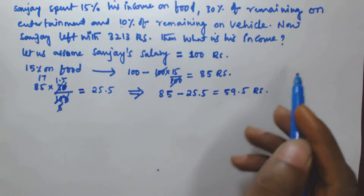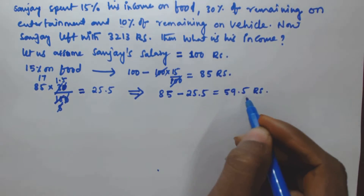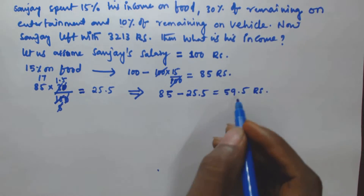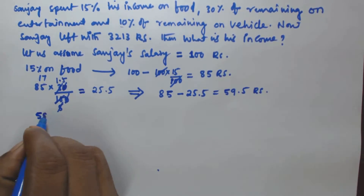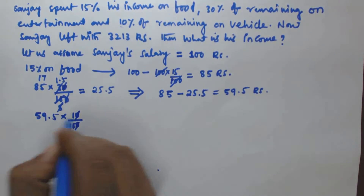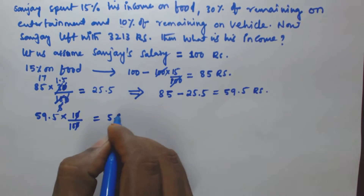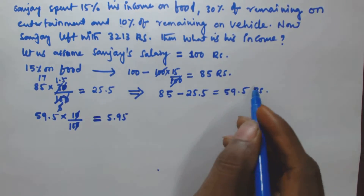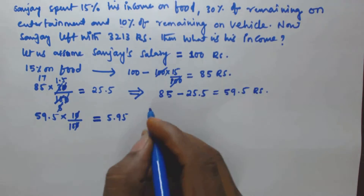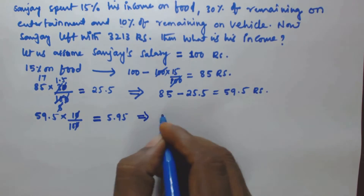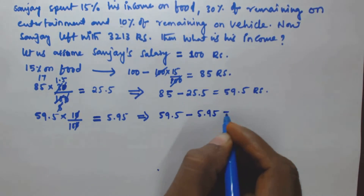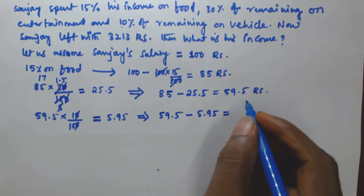Now 10% of remaining — remaining is ₹59.5 — is spent on vehicle. So 10% of 59.5 is 59.5 into 10 by 100, which equals ₹5.95. So out of ₹59.5, he spent ₹5.95 on vehicle.